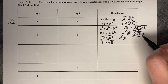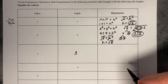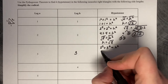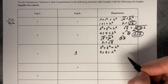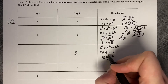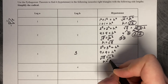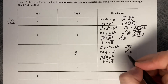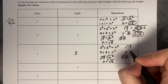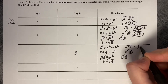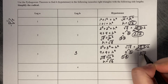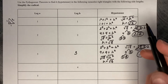So leg=1 gave hypotenuse of square root of two, and leg=2 gives hypotenuse of two square root of two. Let's try leg=3: three squared plus three squared equals h squared; nine plus nine is eighteen equals h squared, so h equals the square root of eighteen. Simplifying: eighteen breaks into nine and two, which is three times three times two. The square root of nine is three, so h equals three square root of two.